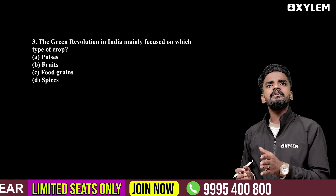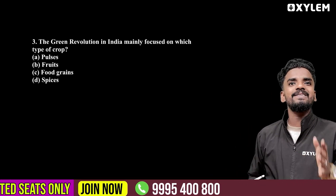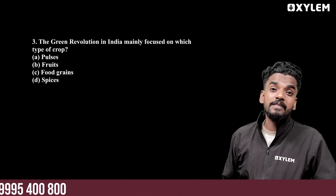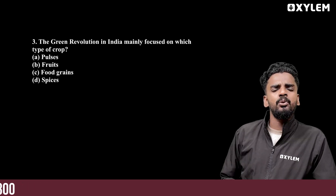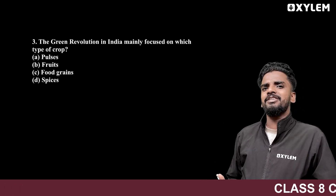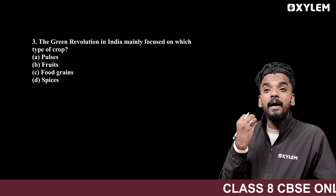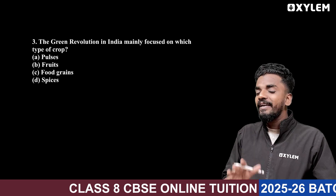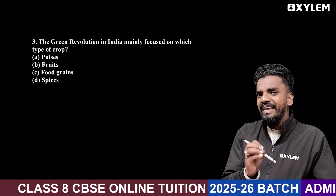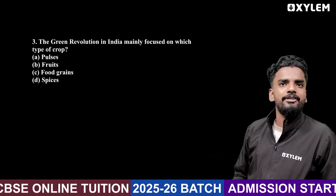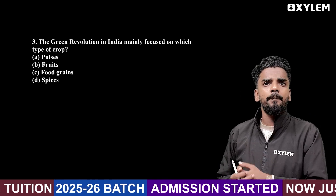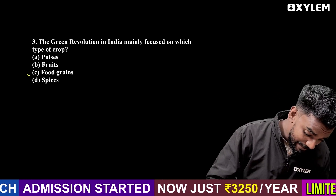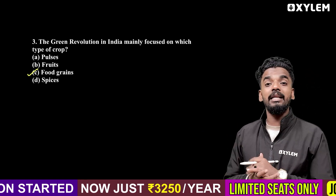The third question: the Green Revolution in India mainly focuses on which type of crops. In India there is food scarcity, so the focus is on wheat and rice. Wheat and rice are cultivated as part of the Green Revolution — these are food grains.